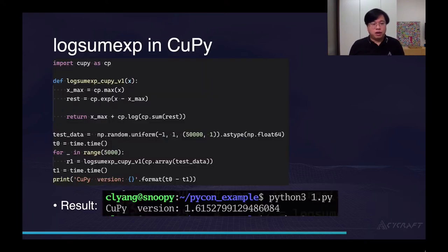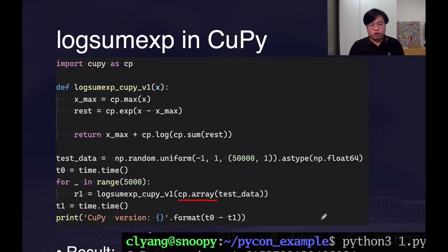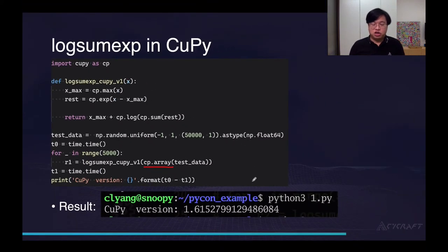How do we implement log-sum-exponential in CuPy? It's quite easy. All you have to do is import CuPy as cp, and then use cp.array to convert the existing NumPy array to a CuPy array, and CuPy will do the rest for you. Here is the final result: the running time of our CuPy version is just 1.6 seconds, down from about 6.5 seconds. It's pretty amazing.